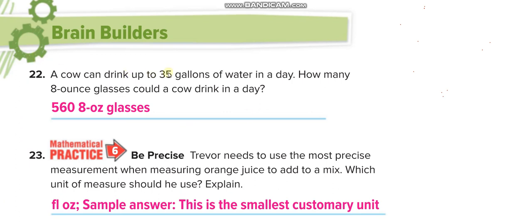A cow can drink up to 35 gallons of water in a day — how many 8-ounce glasses could it drink? First, convert gallons to quarts: 35 times 4 equals 140 quarts. Then quarts to pints: 140 times 2 equals 280 pints. Then pints to cups: 280 times 2 equals 560 cups. Since one cup equals 8 fluid ounces, the answer is 560 eight-ounce glasses.